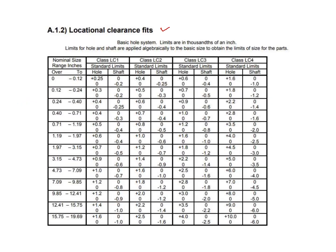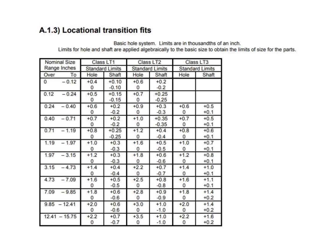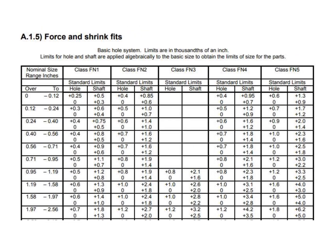Similarly, there are tables for location clearance fits — the LC fits, LC1 through LC4 — with values tabulated according to the range of basic sizes from which we can read hole and shaft values. There is also a table for location transition fits. Finally, force and shrink fits can be read from the table for FN1 through FN5 classes according to their basic sizes, giving the different sizes of holes and shafts.